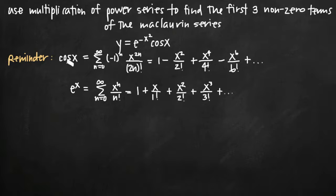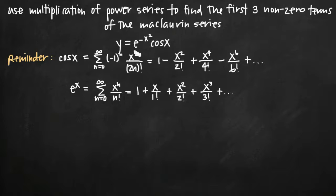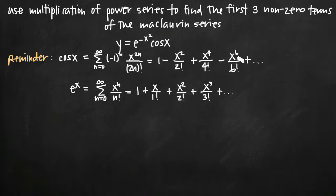We already know that the Maclaurin series of cosine of x is defined by a known summation formula, and the power series expansion comes out to be 1 minus x squared over 2 factorial plus x to the 4 over 4 factorial, and so on.